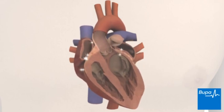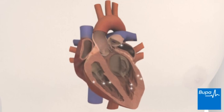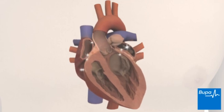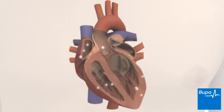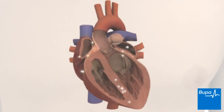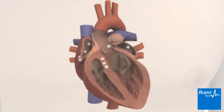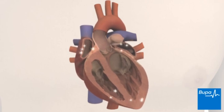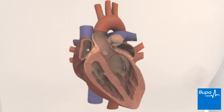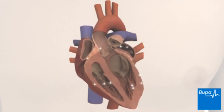In atrial fibrillation, the electrical impulses in the atria become disorganised, overriding the heart's normal rate and rhythm. This causes the atria to quiver or fibrillate. The irregular impulses can be transmitted to the ventricles, causing the heart to pump irregularly and too fast.